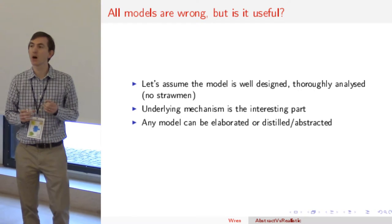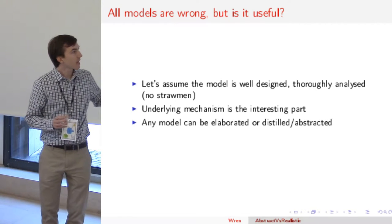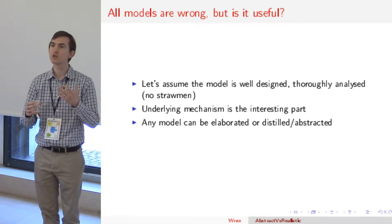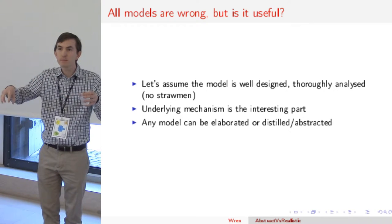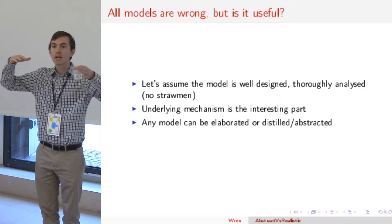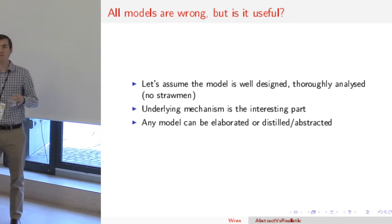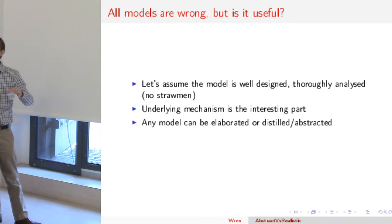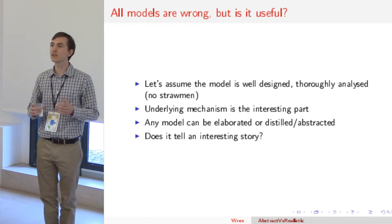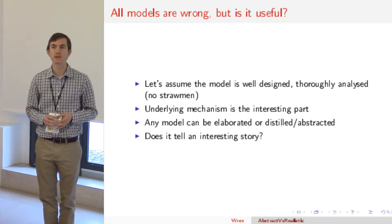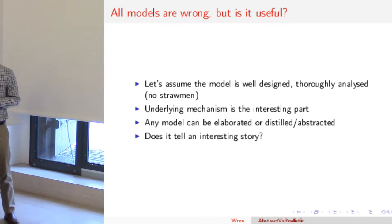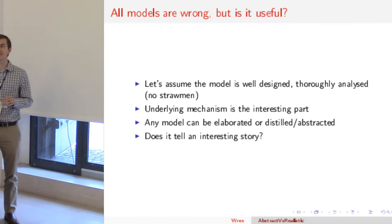Any model you do, whether highly abstract, can be elaborated up — dialed up by adding complexity, new types of agents, new types of societies. You can simulate a little foraging group and then simulate another one interacting with it. Likewise, any highly realistic model can be distilled down into simpler components. These things are not mutually exclusive; they're just ends of a spectrum. At the end of the day, does it tell an interesting story? Is it a useful model contributing something new about the past? If it does, it's useful. If not, we go back to the drawing board.